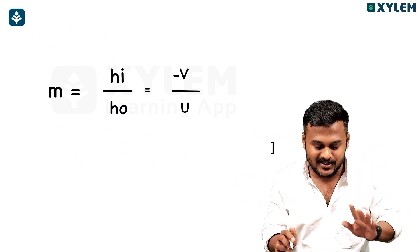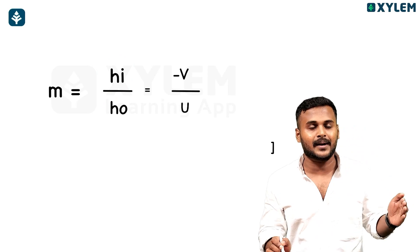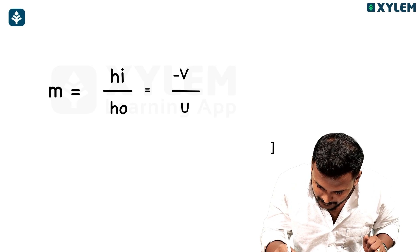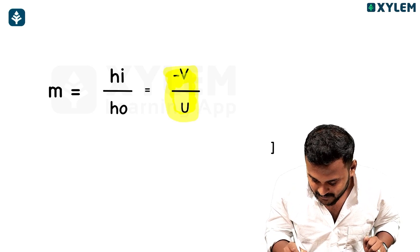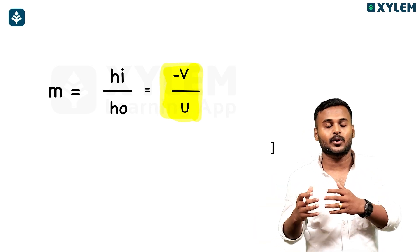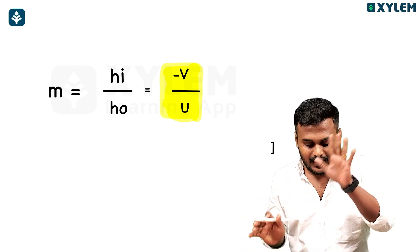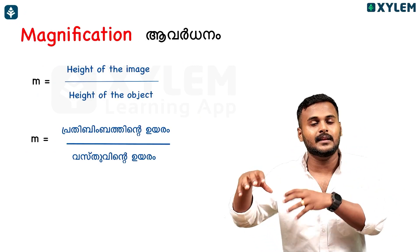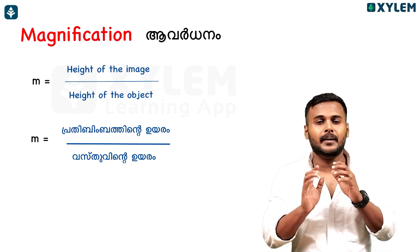So m equal to hi by h-naught — height of the image divided by height of the object — and that means minus v by u. This is the first thing you can learn. So m equal to minus v by u is very important. That means hi by h-naught. The two major formulas in this chapter for numericals are the mirror formula and magnification.